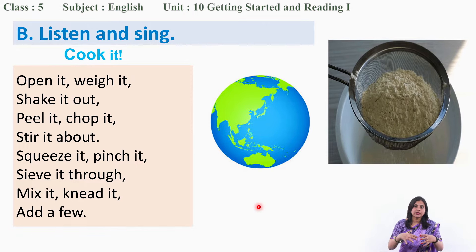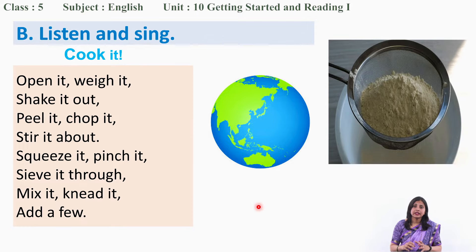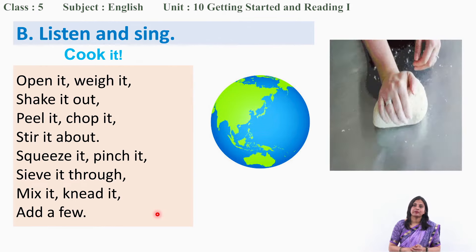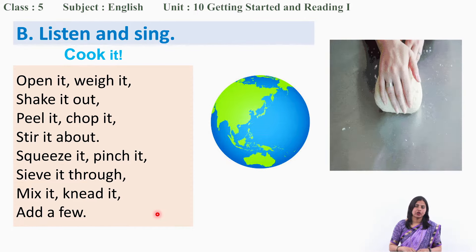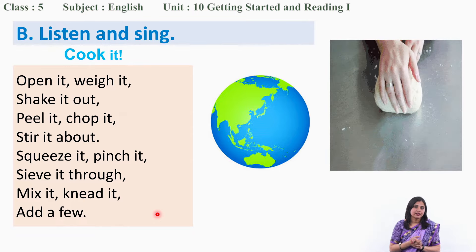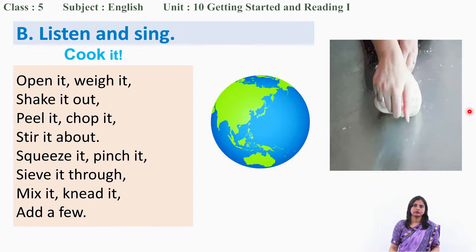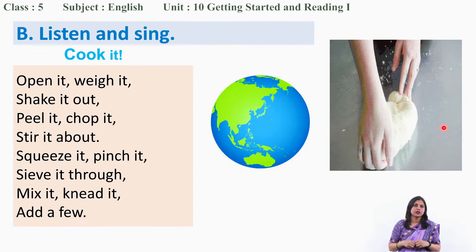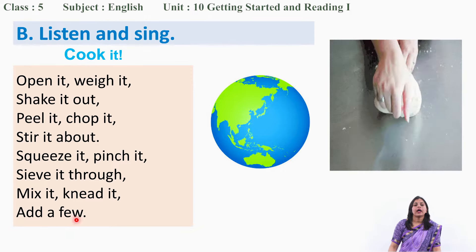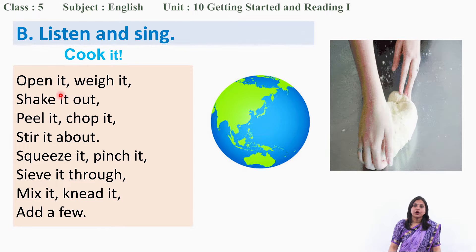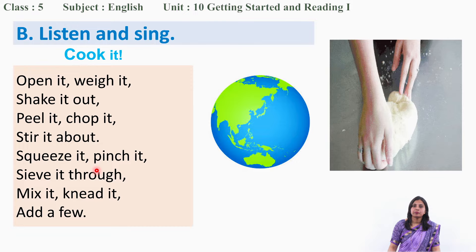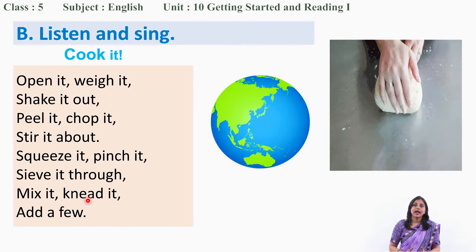Mix it — you know already, putting the things together. Knead — making the dough soft. You might have seen your mother labouring hard to make good and delicious chapati. This is called kneading — making the dough of something, maybe flour or clay, smooth. You have to knead it. And add a few. Let us read one more time: Open it, weigh it, shake it out, peel it, chop it, stir it about, squeeze it, pinch it, sieve it through, mix it, knead it, add a few.